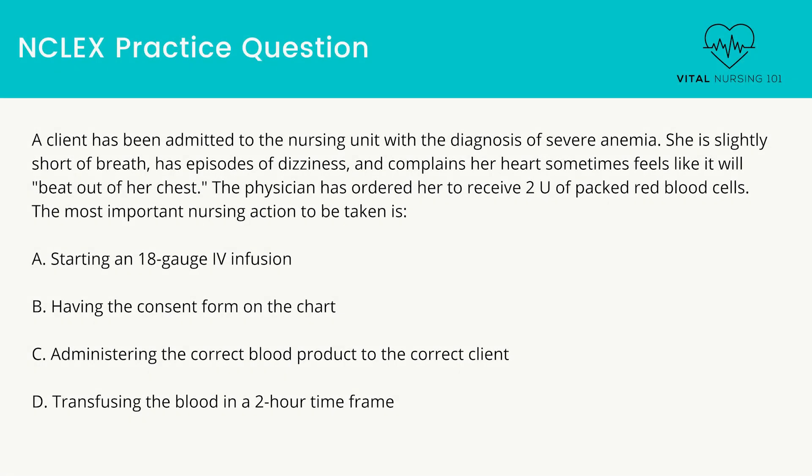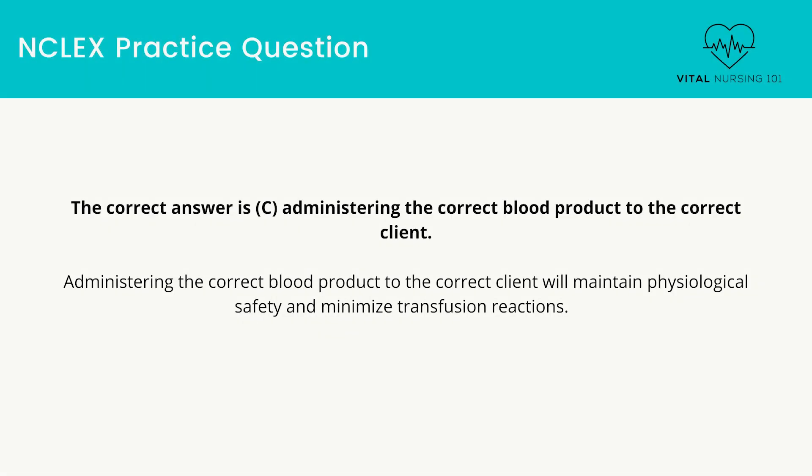A client has been admitted to the nursing unit with the diagnosis of severe anemia. She is slightly short of breath, has episodes of dizziness, and complains her heart sometimes feels like it will beat out of her chest. The physician has ordered her to receive two units of packed red blood cells. The most important nursing action is: starting an 18-gauge IV infusion; having the consent form on the chart; administering the correct blood product to the correct client; transfusing the blood in a two-hour time frame. The correct answer is administering the correct blood product to the correct client, which maintains physiological safety and minimizes transfusion reactions.